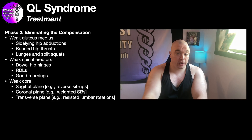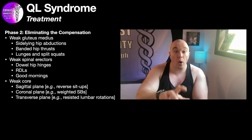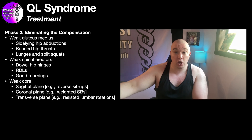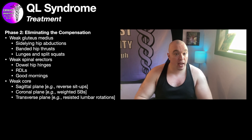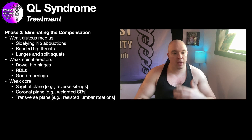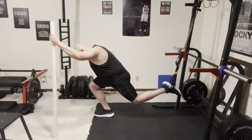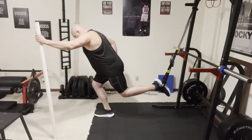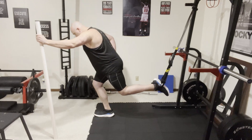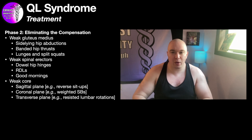Once we've gotten the patient's pain severity and irritability quite a bit down, we enter phase two — eliminating the compensation by strengthening whatever is weak and causing the QL to become tight. Sometimes this phase can happen on the same day as phase one. You may get instantaneous relief from the release, but if that's all you do, it may not stick. We need to strengthen up the weak points. For gluteus medius weakness, we can do sideline hip abductions, banded hip thrusts, lunges, or split squats — any exercise that targets the gluteus medius, but always meet the patient where they're at.